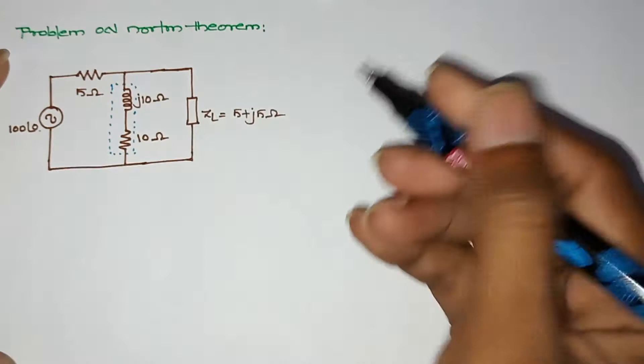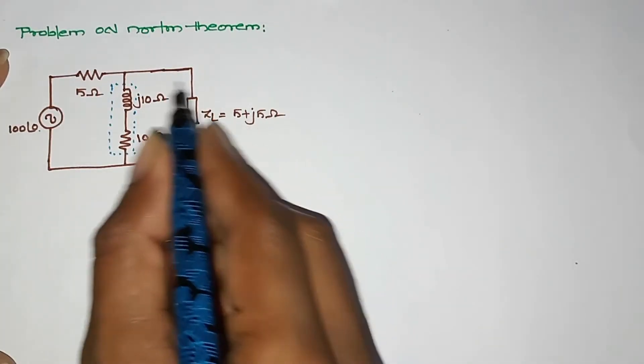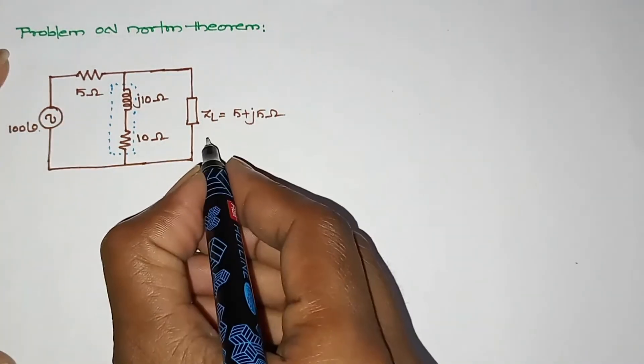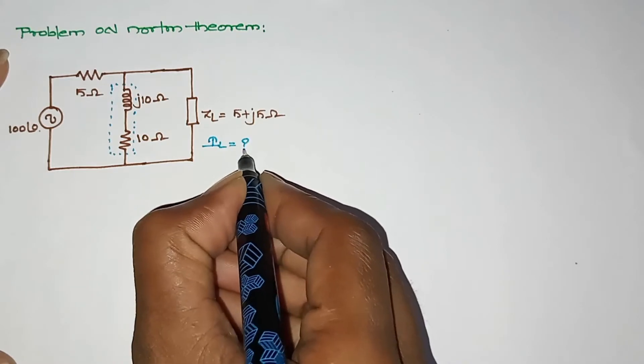The load is 5 plus j5 ohms. These are our values. So we need to find the current value. This is our current value.